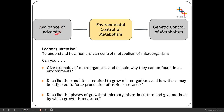For this section you need to be able to give some examples of microorganisms and explain why they can be found in all environments. You need to describe the conditions required to grow microorganisms and how we may adjust those to force the production of useful substances. You also need to describe the phases of growth in microorganisms in culture and give the methods by which growth is measured.